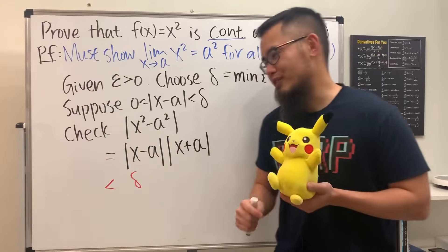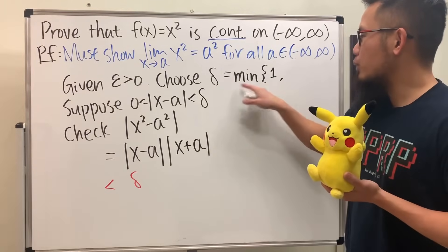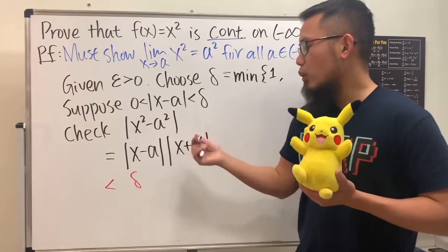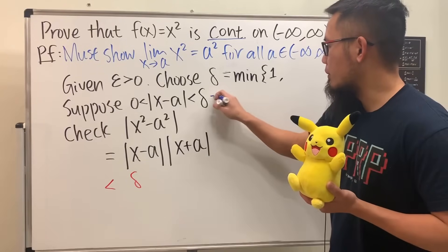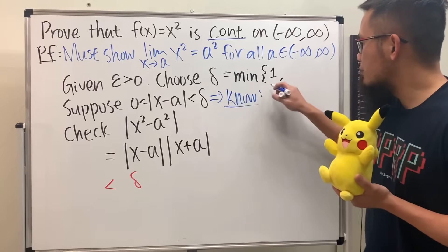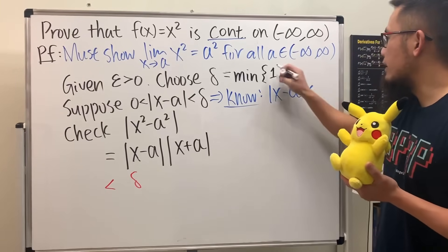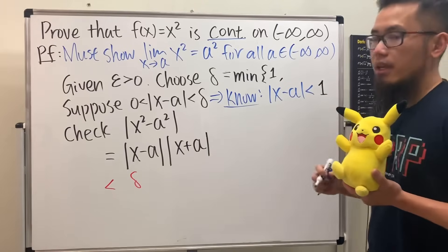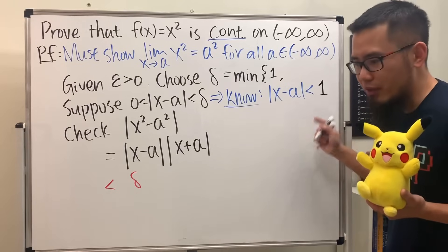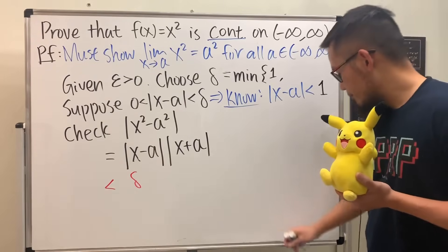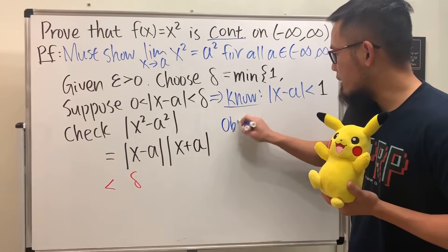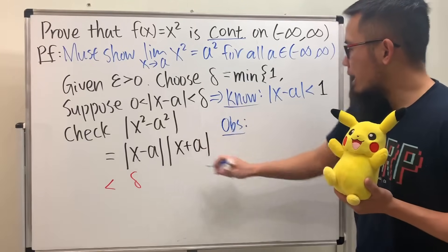Anyway, we have delta is equal to the minimum of one and something else. Based on this and this part of the inequality, we will be able to say the following. So let's just go ahead and write down: we know based on this and that, the absolute value of x minus a will be less than one. And you can imagine if earlier we put down one half right here, then we'll just have to put on one half right here. That's the idea. So that's what we have and this is what we're trying to get.